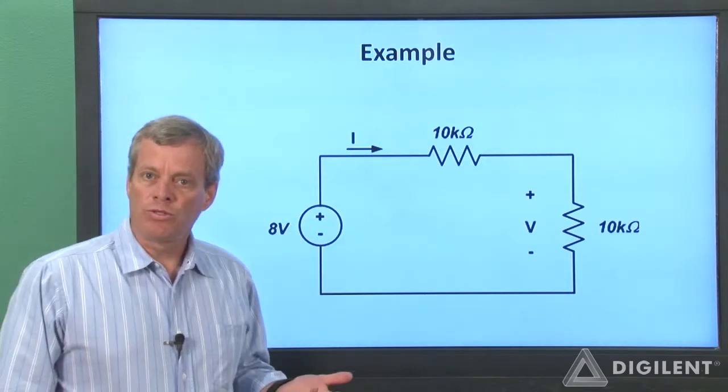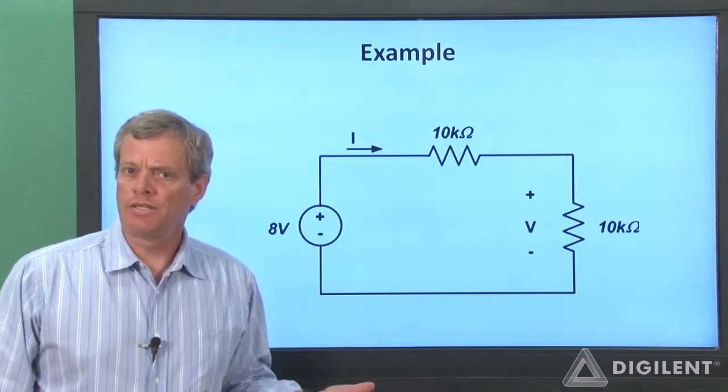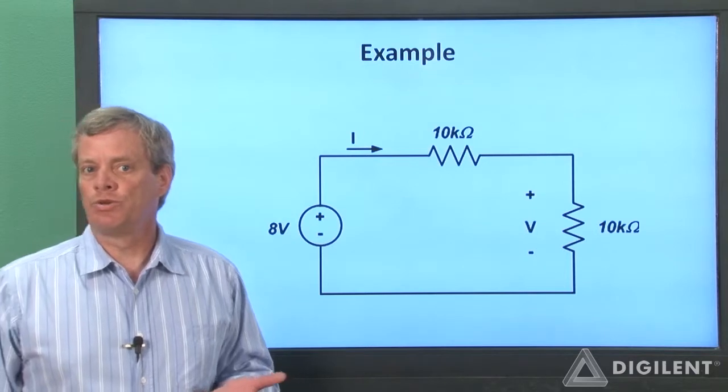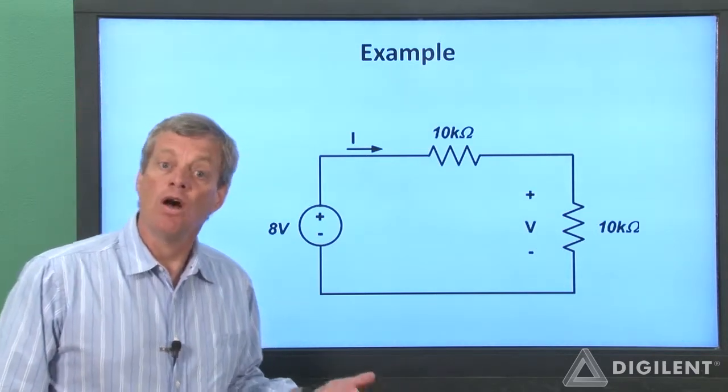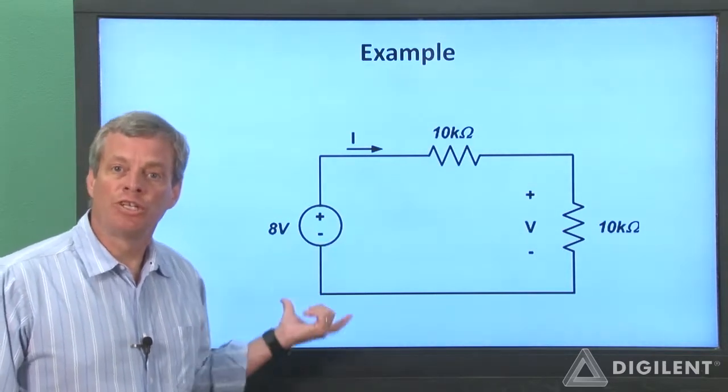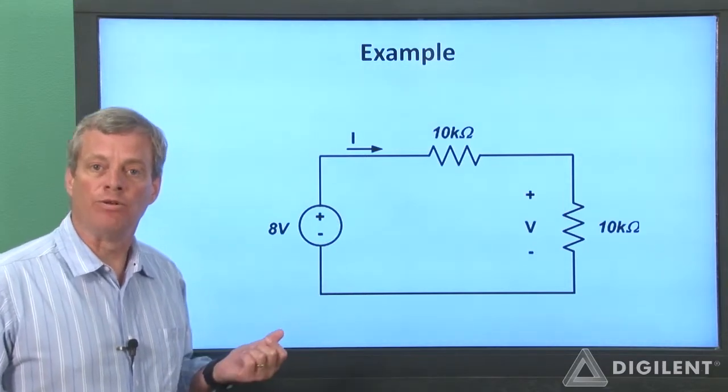We want an 8 volt source, but if we use the analog discovery, we only have access to voltage sources with a maximum of 5 volts. Our solution to this is going to be to add two voltages together that sum to 8 volts.